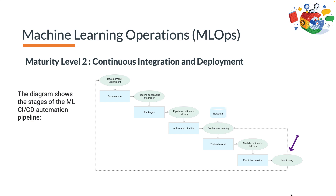Stage 6 is monitoring: you collect statistics on the model performance based on live data. The output of this stage is a trigger to execute the pipeline again or to execute a new experiment cycle.